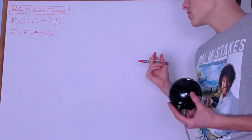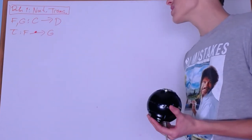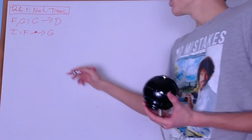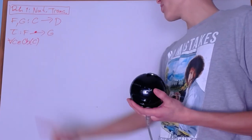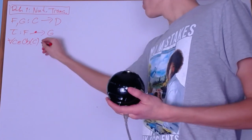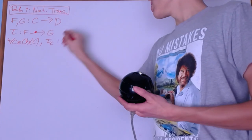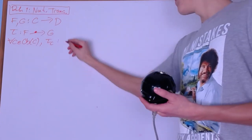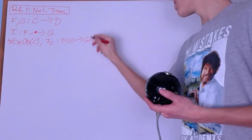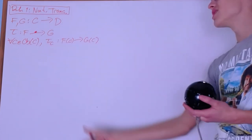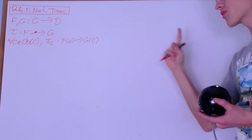The first condition is that we can transition between the functors applied to objects. So for every single object C of the category C, we define a morphism tau sub C — that's a subscript — and it is a morphism from F of C to G of C. This morphism is the transition between the functors applied to the objects.